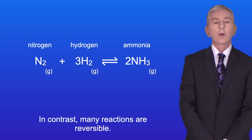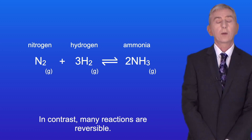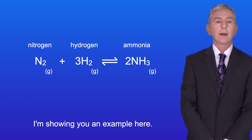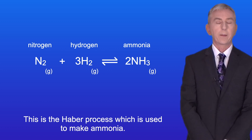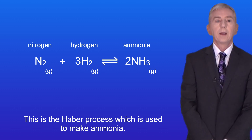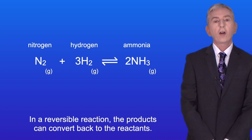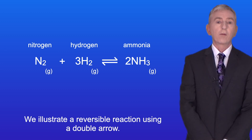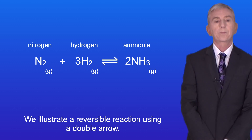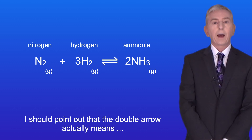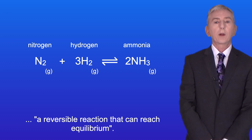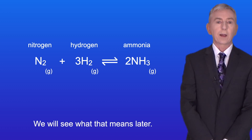In contrast, many reactions are reversible, and here is an example: the Haber process, which is used to make ammonia. In a reversible reaction, the products can convert back to the reactants, and we illustrate a reversible reaction using a double arrow. The double arrow actually means a reversible reaction that can reach equilibrium, which we'll see later.